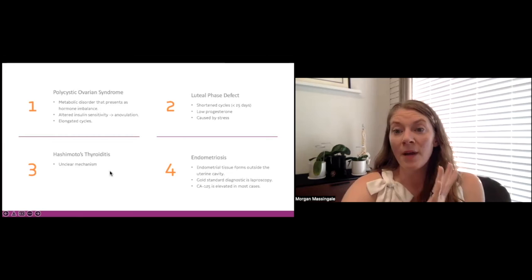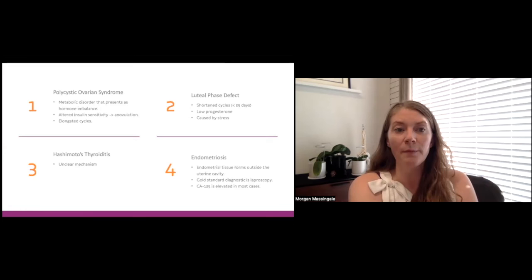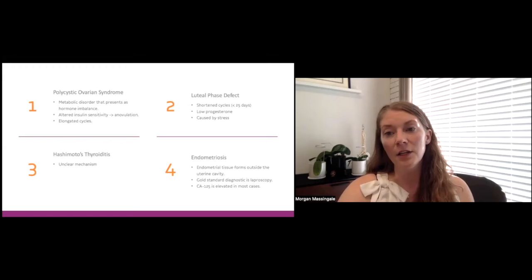To that end, there are four major reasons that women typically suffer pregnancy loss or infertility. The first being polycystic ovarian syndrome. Polycystic ovarian syndrome really is more of a metabolic disorder that presents as a hormone imbalance. So you're seeing an insensitivity to insulin, which is actually leading to anovulation. So the inability to ovulate or release an egg.